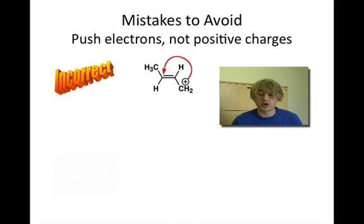Another mistake that we see very often is that it's the electrons that are moving. Every time we draw curved arrows, the only thing that's ever going to move is electrons. Do not draw your arrows from a positive charge. A positive charge is an absence of electrons, so positive charges will not move.